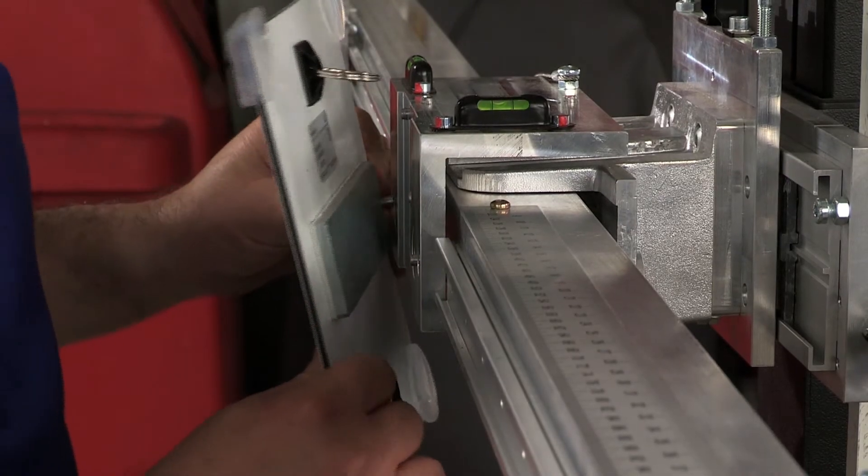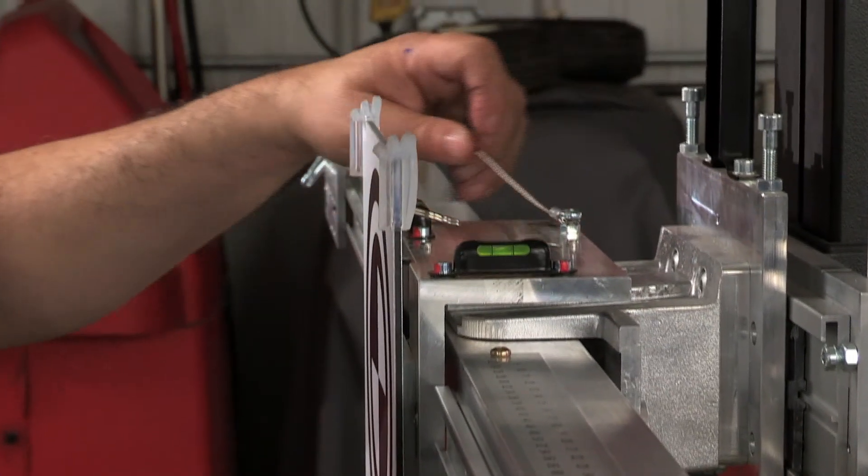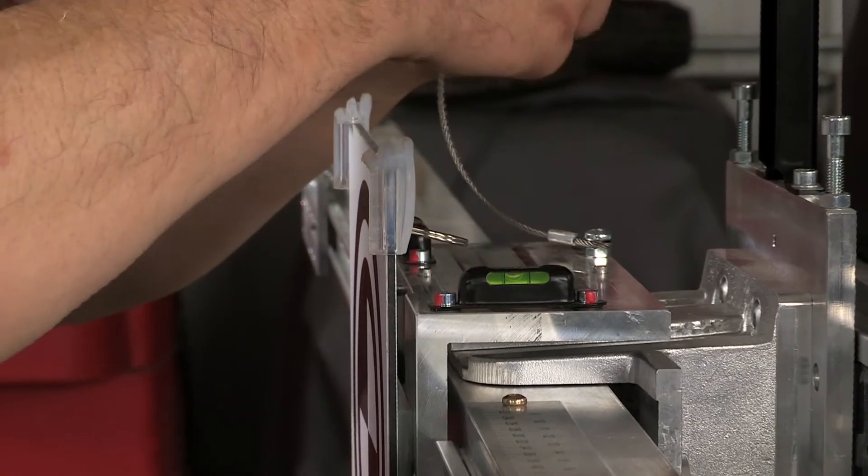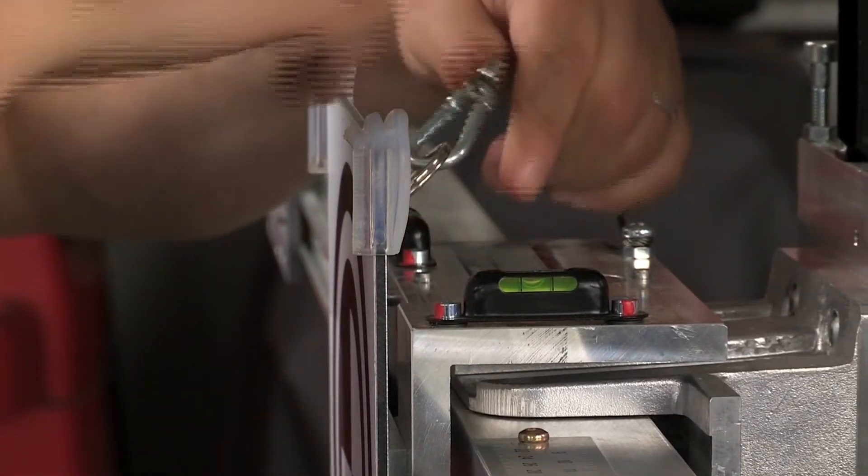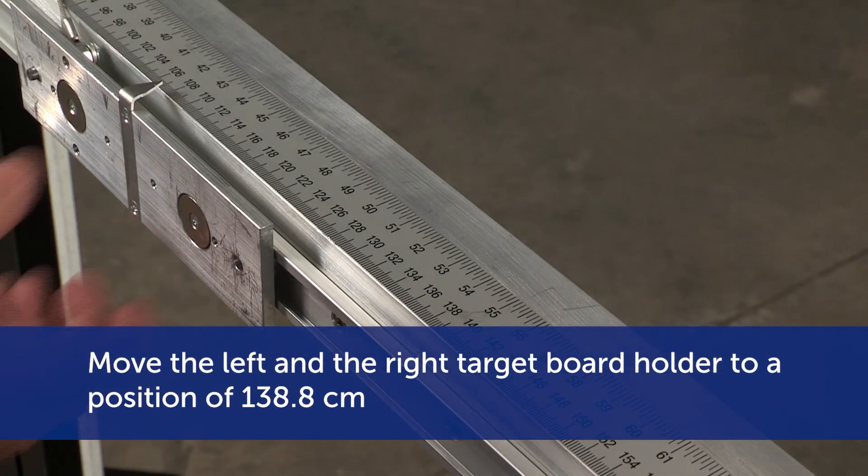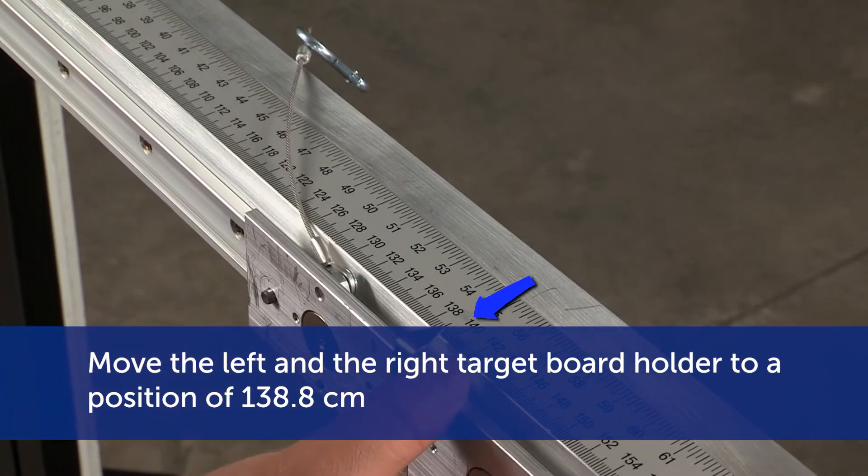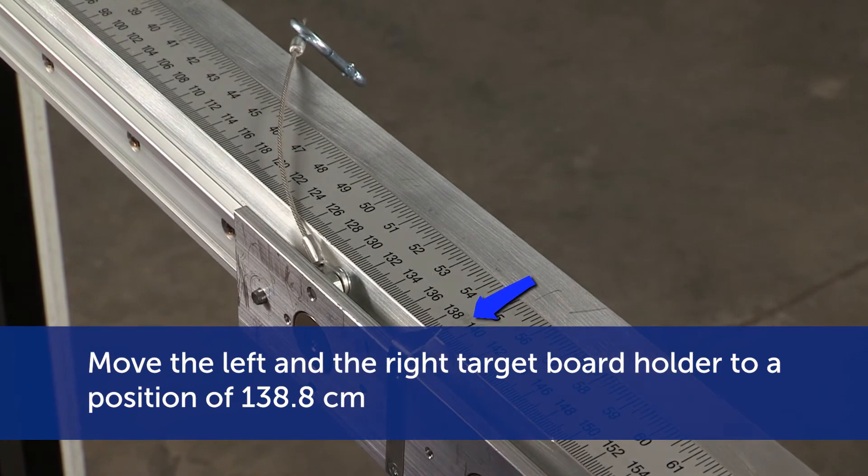Install the target board to the center position, aligning the dowel pins with the holes and the magnets and now connect the safety wire. Move the left and the right target board to the position of 138.8 centimeters.